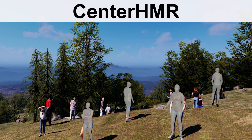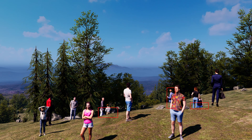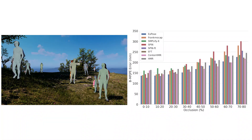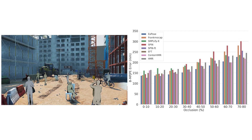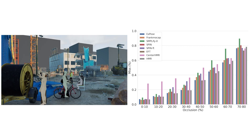AGORA enables an in-depth analysis of errors with respect to multiple variables like amount of occlusion, body orientation relative to the camera, and adults vs. children. Here we show the dependence of errors on the percentage of occlusion. As the amount of occlusion increases, so does the error. Since AGORA has 5 to 15 persons per image, methods may not detect every person, leading to false negatives or misses. As the amount of occlusion increases, the percentage of misses also increases.